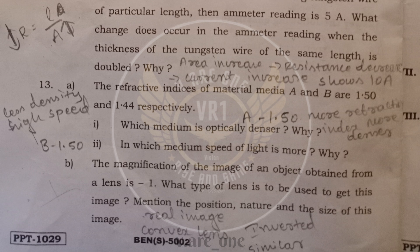And 13th B question. The magnification of the image of the object obtained from the lens is minus 1. And what type of lens is to be used to get this image? And mention the position, nature and size of the image. So it is minus 1 means it is a real image. Real image we can get by the convex lens. And the real image is always inverted. And here minus 1 means the image is in similar size. And here object is placed in 2F2.